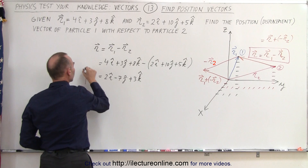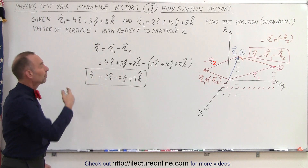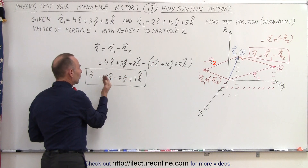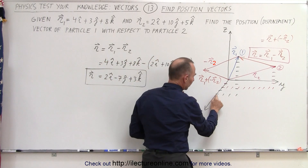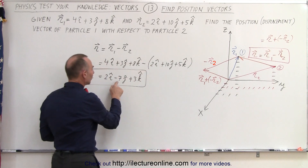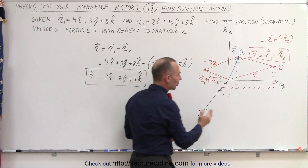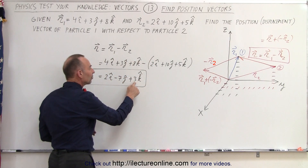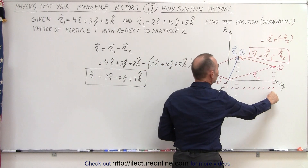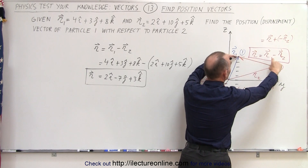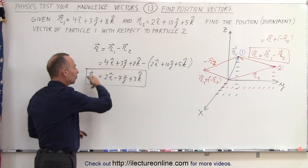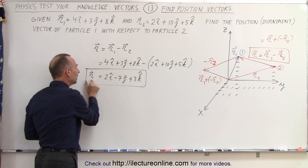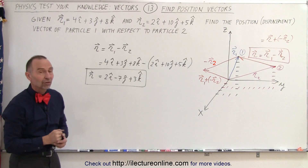And this is the position or displacement vector giving us the position of particle 1 with respect to particle 2. To understand what that answer means: particle 1 is 2 units further in the X direction than particle 2; particle 1 is 7 units to the left of particle 2 in the Y direction; and particle 1 is 3 units higher in the Z direction than particle 2. That's what this expression signifies — it gives you the displacement in X, Y, and Z for particle 1 with respect to particle 2, and that's what we mean by that position or displacement vector.